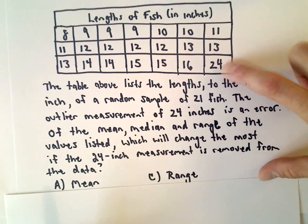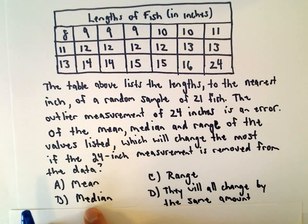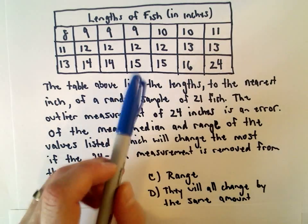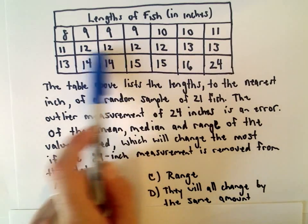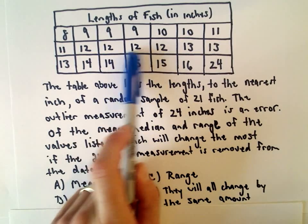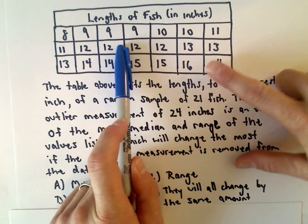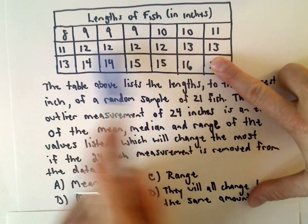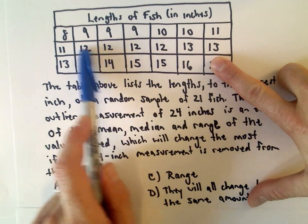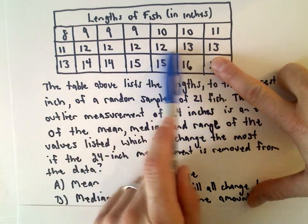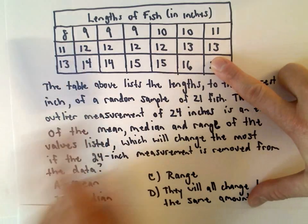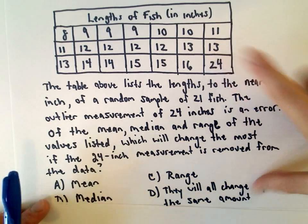The median is the middlemost value, so the middlemost value looks like it should be 12. If you throw out the 24, maybe you've got to average something between 11 or 12, so again the median isn't going to change very much either.